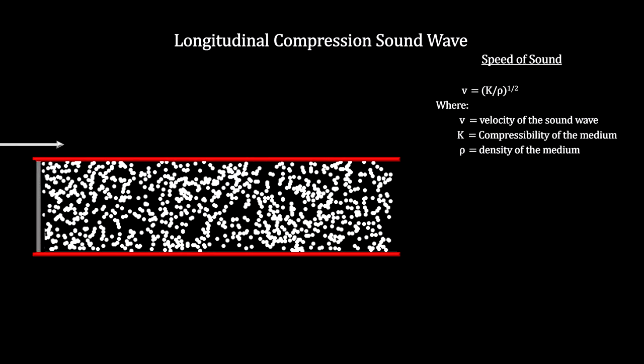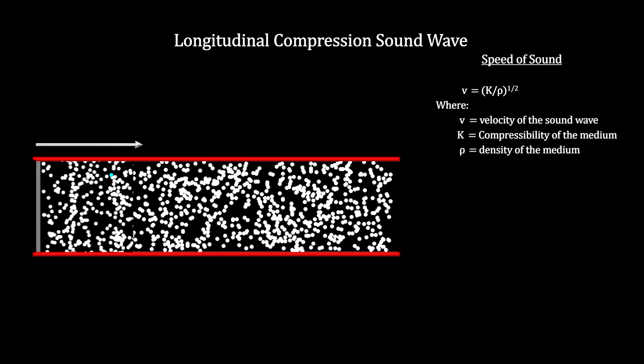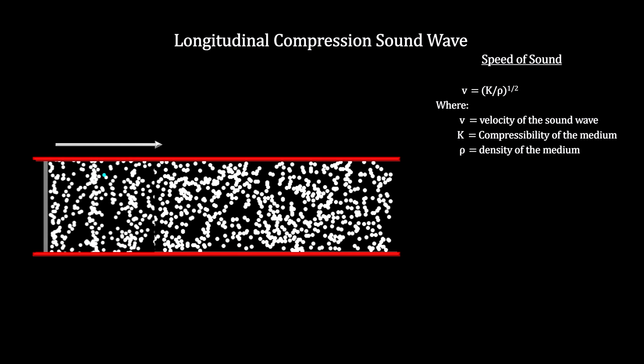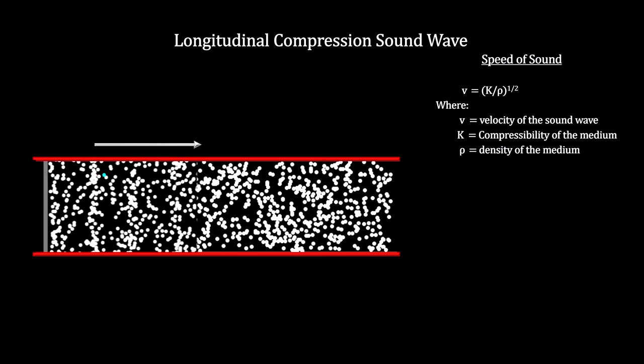How fast the wave moves depends on the characteristics of the medium. In particular, the higher the resistance to compression, its compressibility, the faster the movement. And the closer the molecules are to each other, its density, the slower the movement.